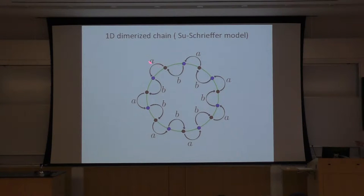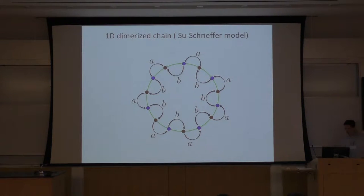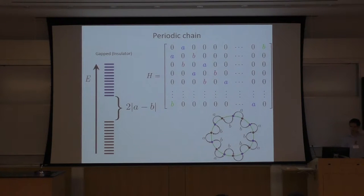These points are atoms, and electrons at atoms can hop to neighboring sites. The hopping amplitude would be A for every other link, and between them the hopping amplitude is B. So we have this asymmetric hopping amplitude. What is the matrix representation of this Hamiltonian? It's very simple.